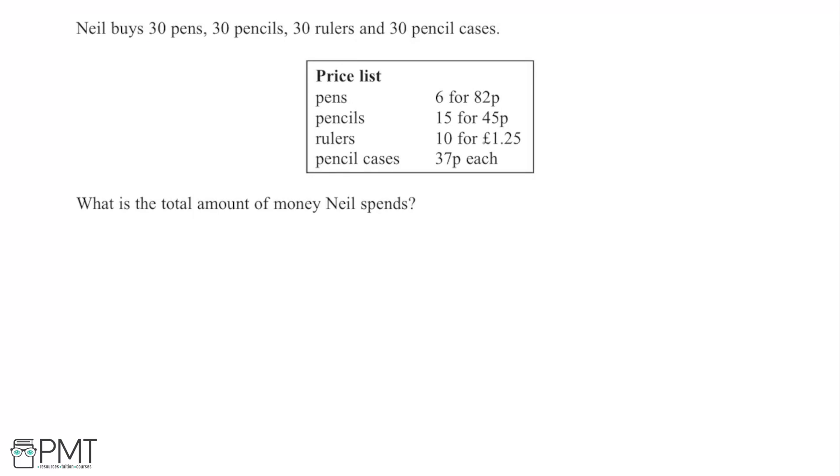So here I'm told that Neil buys 30 pens, 30 pencils, 30 rulers and 30 pencil cases.